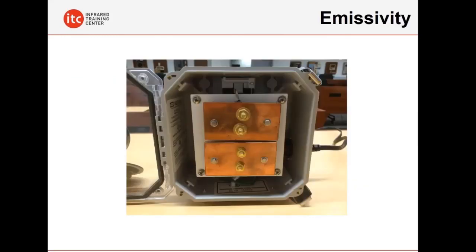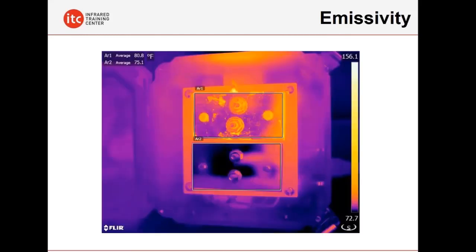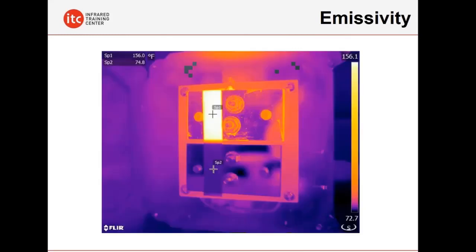Emissivity is the big one here as well. This is a copper busbar lab that we run in our level one training courses. Shiny metals don't emit their energy well at all. They're very inefficient in their ability to give off their true thermal signatures. What looks like only to be a five degree temperature difference on these two copper, bare copper metal surfaces, a five degree difference is really a 75, 80 degree difference.